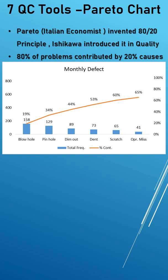The first one, blowhole, has a frequency of 150 numbers, and that alone is contributing to 19% of defects.